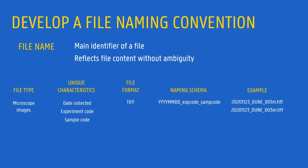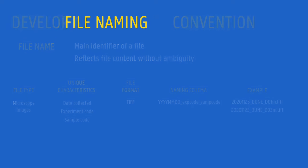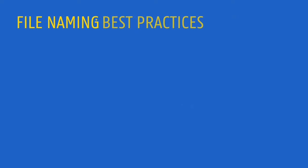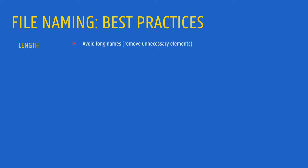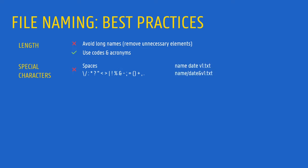When choosing a file name, there are some additional best practices that you should follow. Avoid using long names. Try to remove unnecessary elements and use codes or acronyms to make it shorter. Avoid special characters and spaces, which can create problems with certain programs. Instead, use underscores or camel case to separate words or elements in the file name.